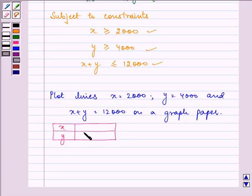If we take the value of X as 4,000, we have the value of Y as 8,000. And if we take the value of Y as 6,000, then we have the value of X also as 6,000. So let us plot these three lines on a graph paper.